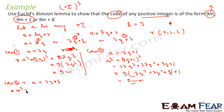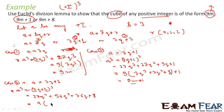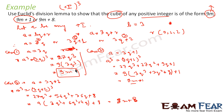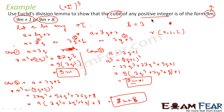Case 3: a equals 3q plus 2. Then a³ equals (3q+2)³, which expands to 27q³ plus 54q² plus 36q plus 8. Taking 9 common from the first three terms: 9(3q³ + 6q² + 4q) + 8, which is nothing but 9m plus 8, where m equals 3q³ + 6q² + 4q. So what we have seen is that the cube of any positive integer is either 9m, 9m plus 1, or 9m plus 8, which is exactly what our question asked us to prove.